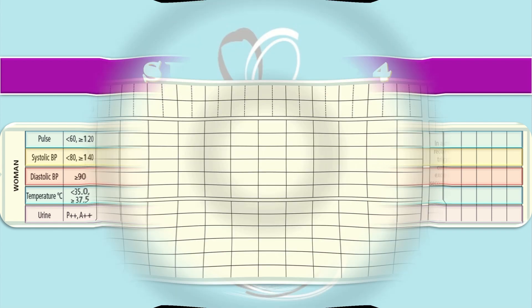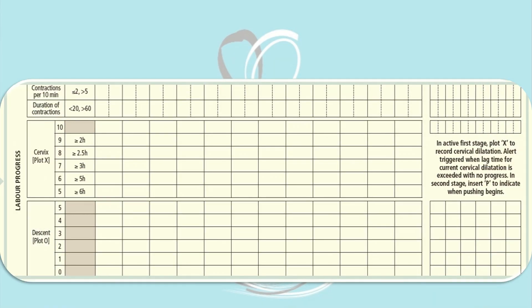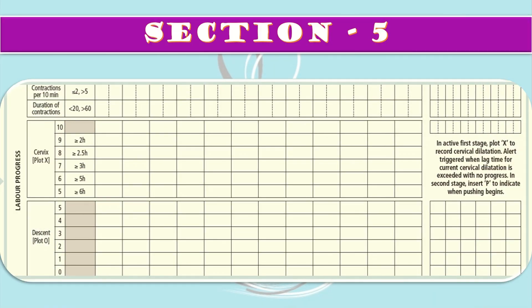Section 5 of the WHO Labor Care Guide is about labor progress. First, check the number of contractions in 10 minutes. If contractions are three to five per 10 minutes, assess uterine contractions every 30 minutes during the first stage and every five minutes during the second stage. Fewer than two or more than five contractions per 10 minutes are not normal.